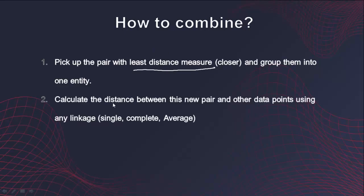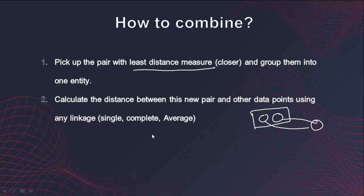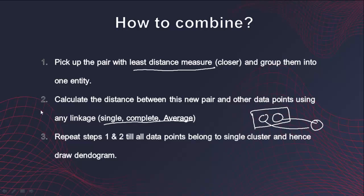Once a group is formed, calculate the distance between this group and the other data points. For two data points combined into a single group, how do you find the distance to another point? That's where several linkage techniques come in: single, complete, and average. Repeat these two steps until all data points belong to a single cluster. We can then draw a graph called a dendrogram, which depicts how these clusters are formed in a stepwise manner.